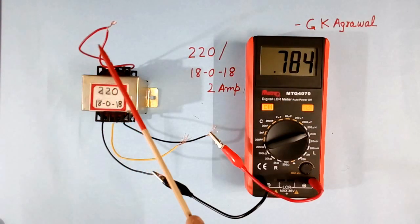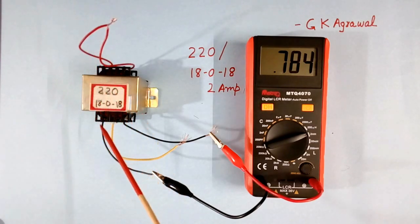So we should never keep this primary wire open when we are using the secondary winding as an inductor.